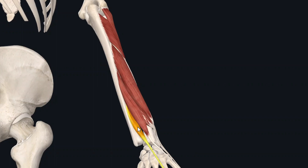Unlike the superficial muscles, the deep muscles do not have a common origin. Rather, these muscles originate from different areas of the posterior compartment of the forearm. However, these muscles have one thing in common: they receive their innervation from the deep branch of the radial nerve, which is also called the posterior interosseous nerve of the forearm.